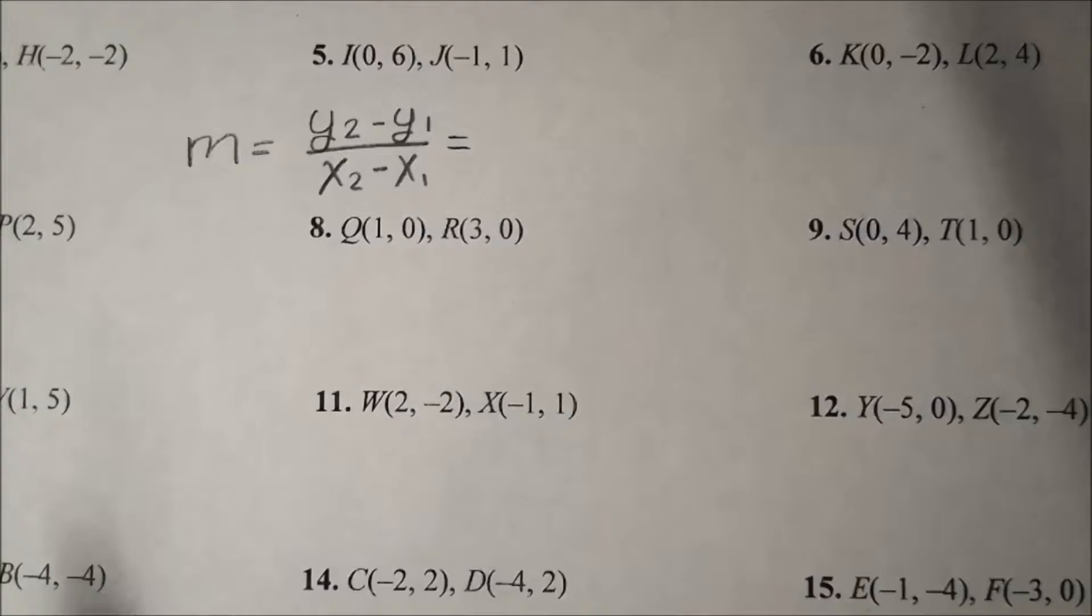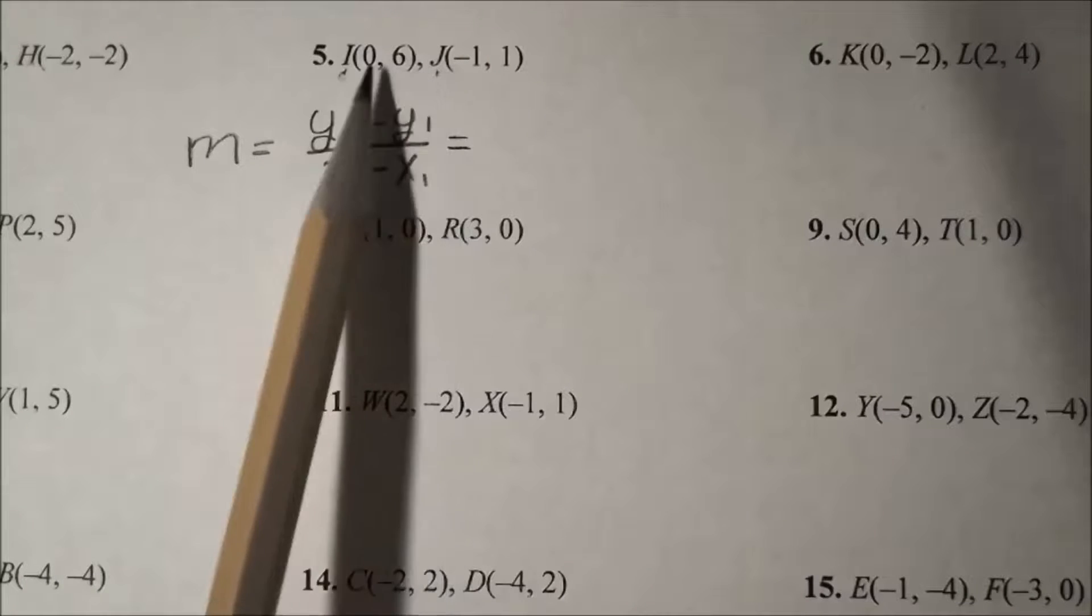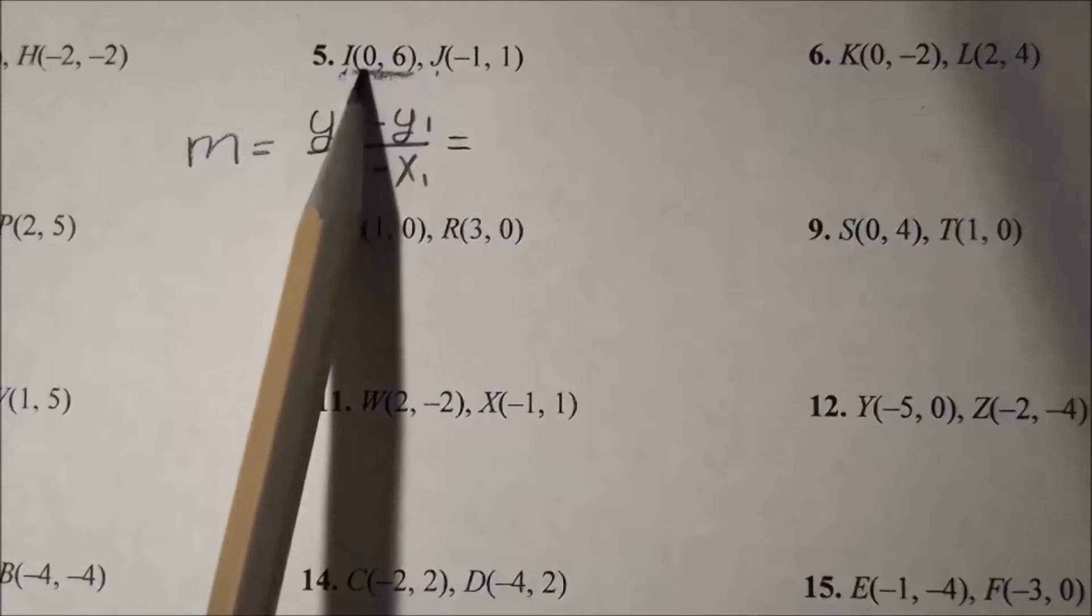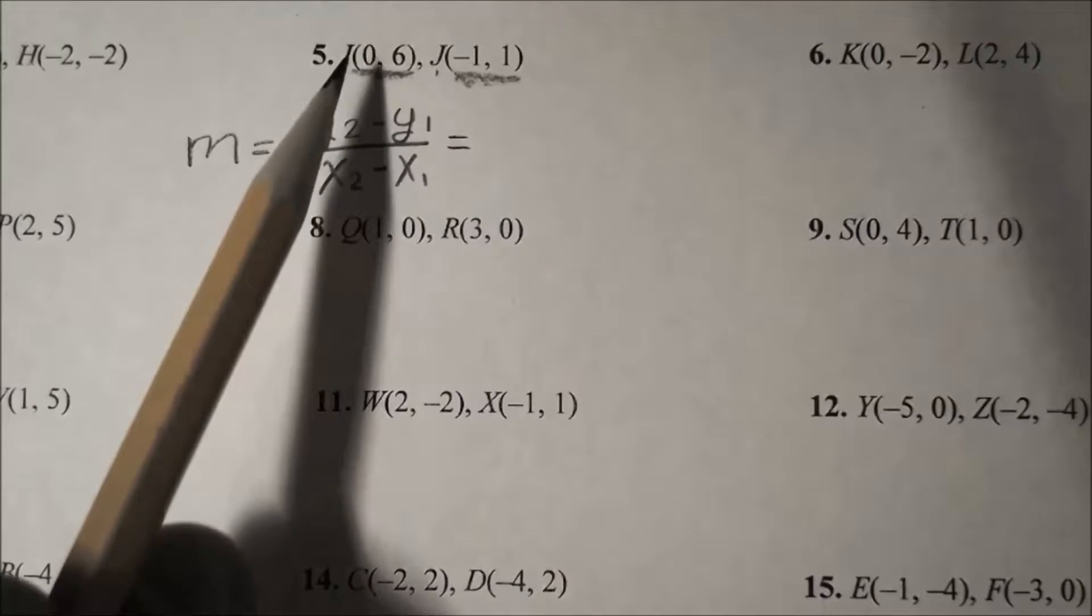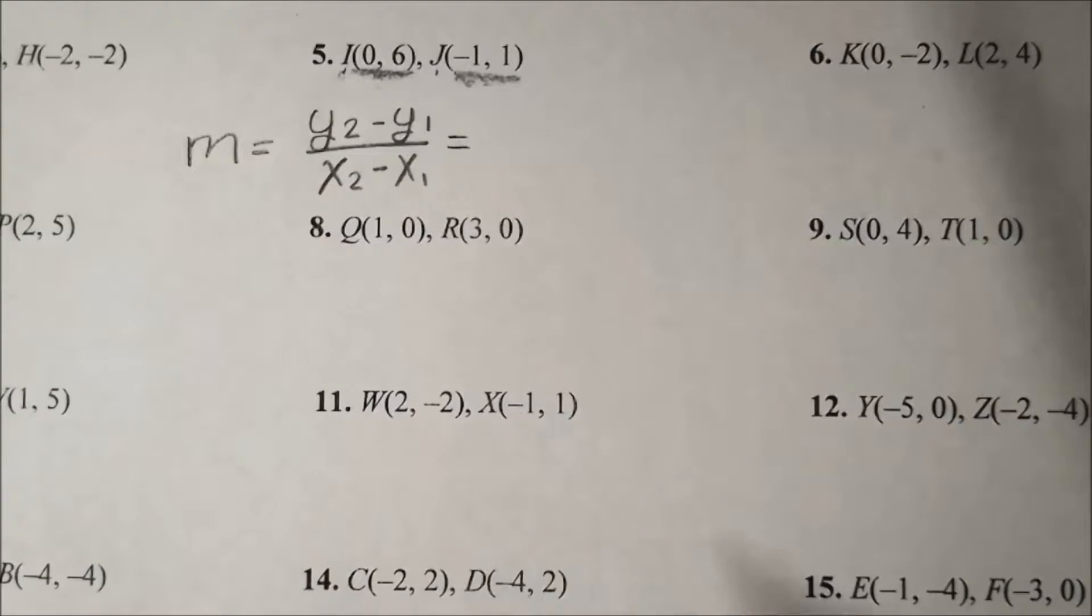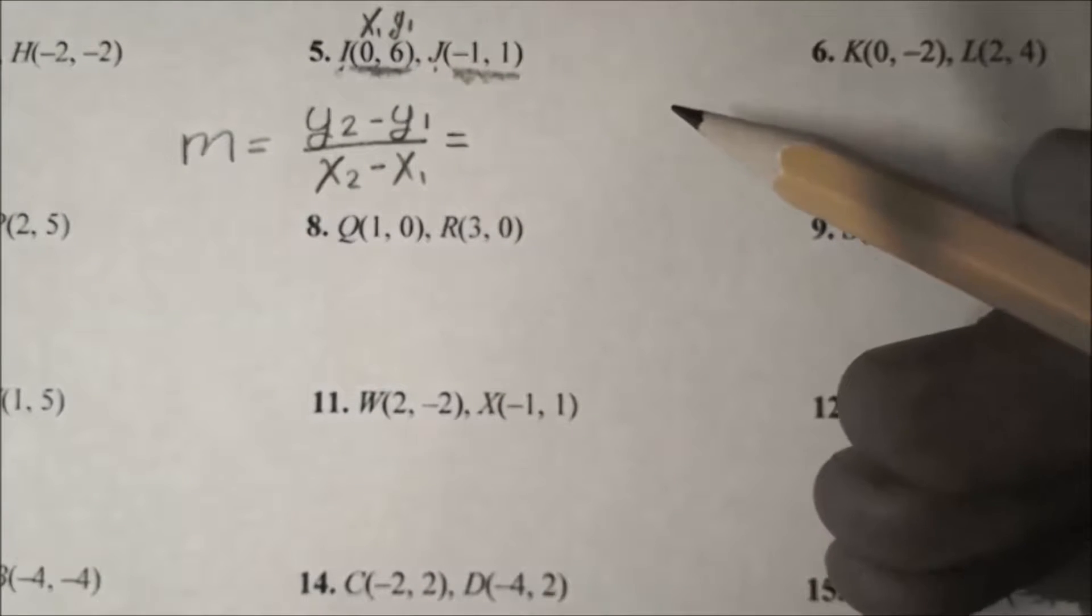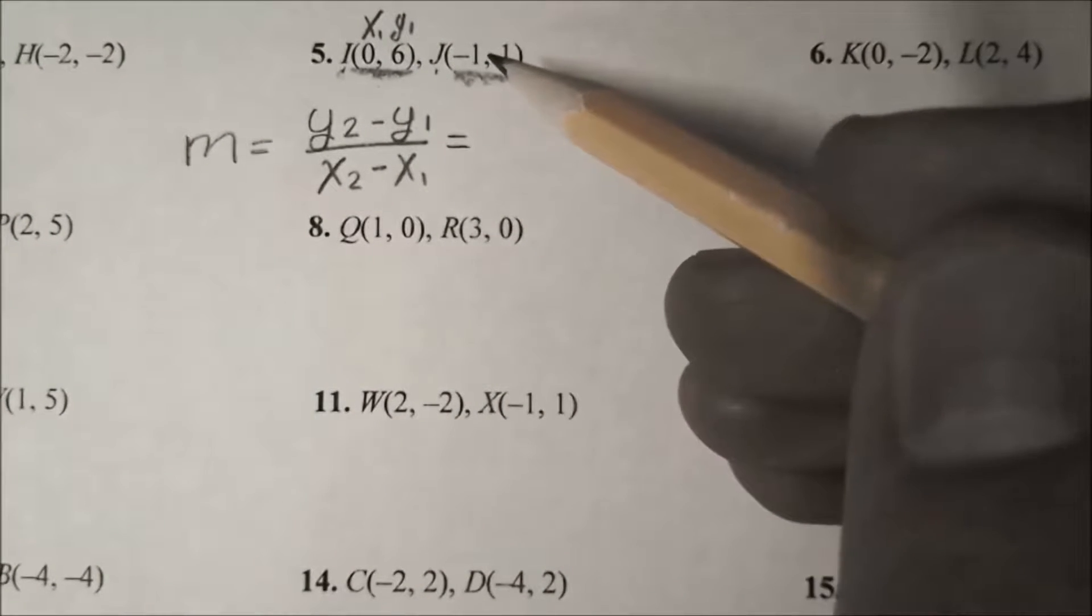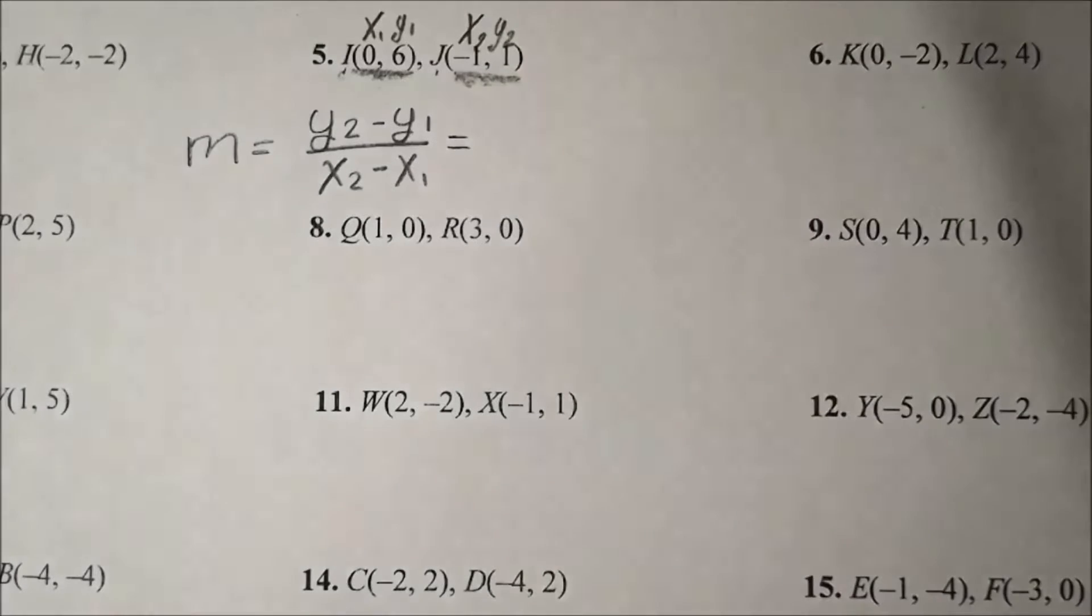I now need to label my two points. I have point I and point J, and they give me an ordered pair for each. The first one I'm going to call my x₁ and y₁. Now this is important to label because when we go back to it we need to know where to plug our numbers in and we don't want to get them mixed up.